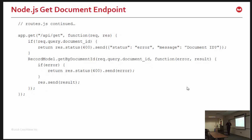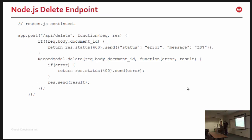We'll do another endpoint for GET — when we edit a person, we first need to get their info to fill out the form. We call '/api/get'. Validation checks that a document ID was passed in — if not, that's a bad request. Assuming validation succeeds, we call getByDocumentID on record model, passing the document ID with another callback. Then there's a DELETE endpoint at '/api/delete' — again looking for document ID, calling a delete method with the document ID and a similar callback.